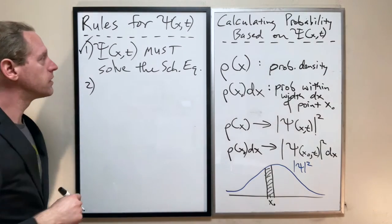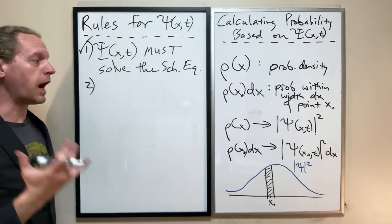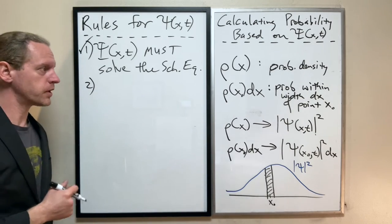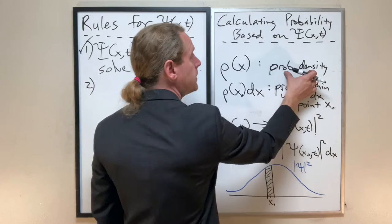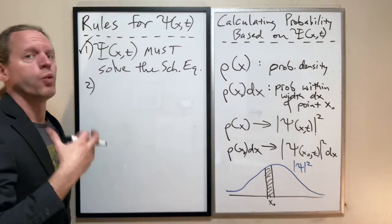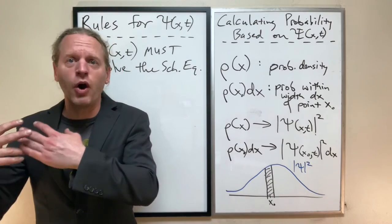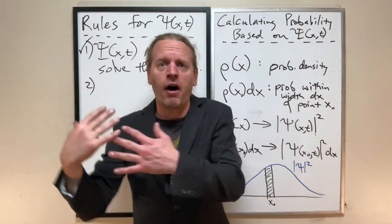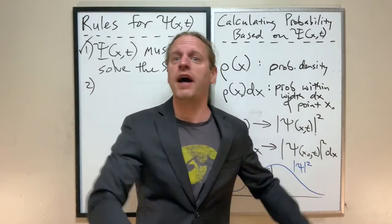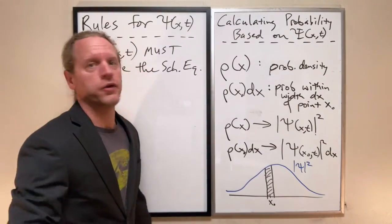The second thing, because it's a probability distribution, or specifically because it's a probability density, we know that if you take the total of all the possible values, it has to add up to one.